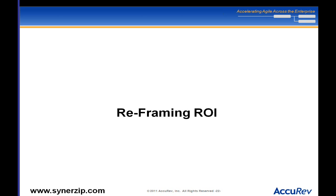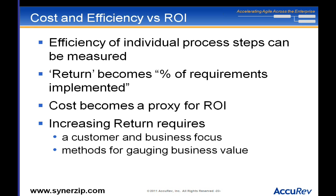Before we discuss the return, let's reframe the whole ROI thing. I've noticed that when we talk about ROI, we're actually only really talking about the cost. Why is that? It turns out that the efficiency of individual process steps is easy to measure — this person costs me this much, that person costs me that much, this person is producing this much. But measuring value is so hard.